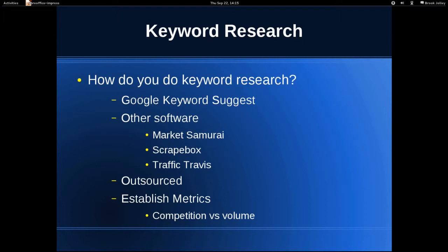Another thing you can do is outsource it. An awesome resource for outsourcing is Fiverr.com — that's F-I-V-E-R-R.com. You can go there and get people to do keyword research for you for $5. Or you could pay someone $250 and waste $250. Instead, go to Fiverr, spend $15, get keyword research from three different people, compare what they said, and you've gotten a by-committee keyword research done for $15 rather than spending a fortune.